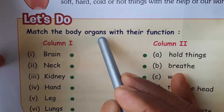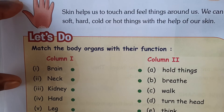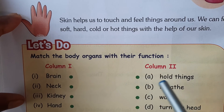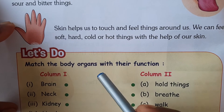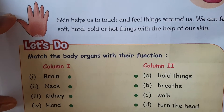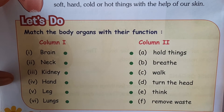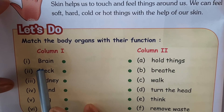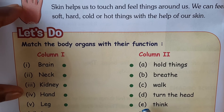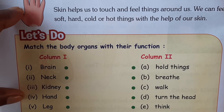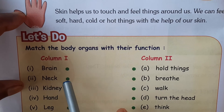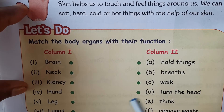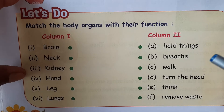Let's do an activity — match the body organs with their functions. Column 1 has names of body organs and Column 2 has their functions. For example, brain matches with think. You also match neck, kidney, hand, leg, lungs with the correct words.